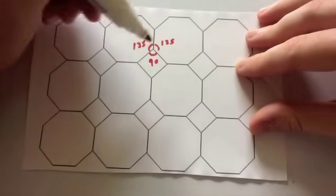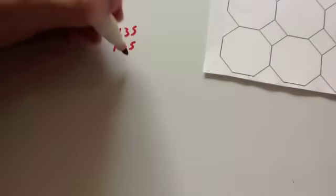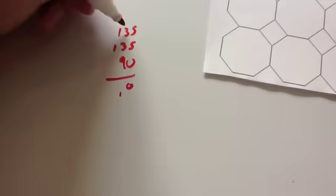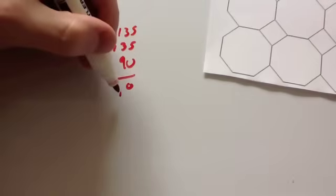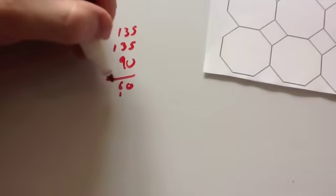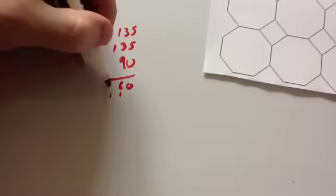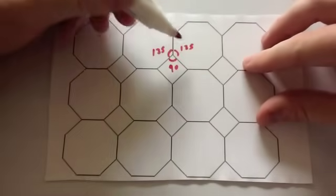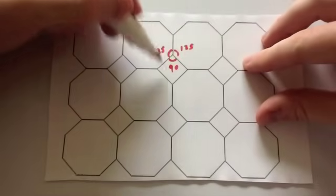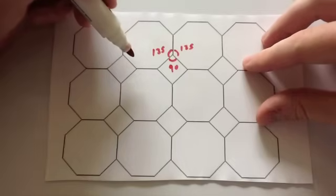Let's add these three angles together. 135 plus 135 plus 90. 5 plus 5 plus 0, 10. 3 plus 3 is 6, plus 1 is 7, plus 9 is 16. 1 plus 1 plus 1 is 3, so 360. And that's important because for the shape to tessellate, the angles must add together to give you 360 degrees.